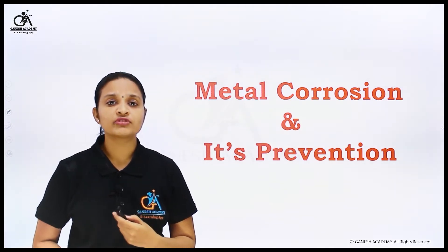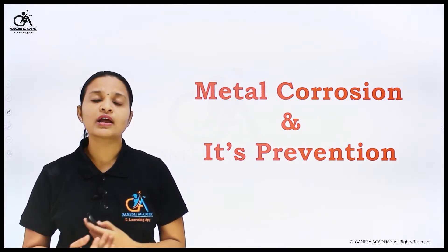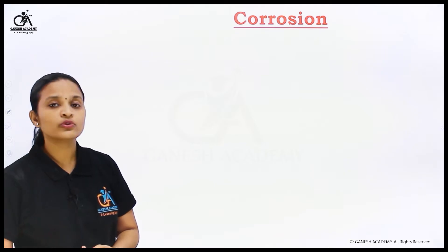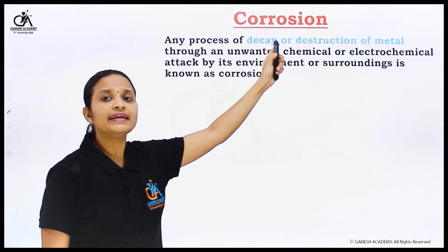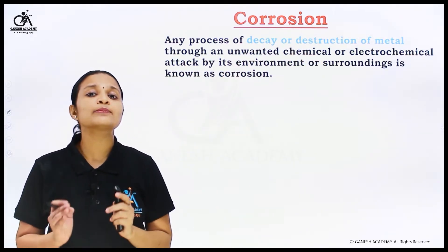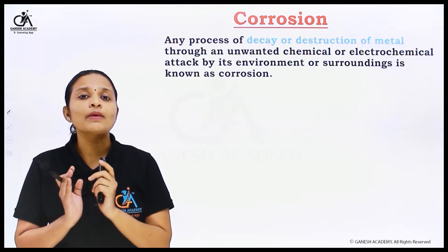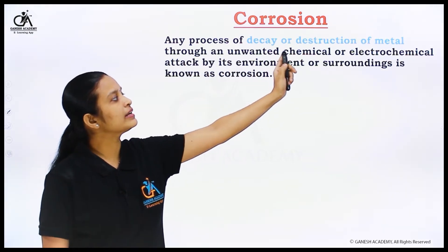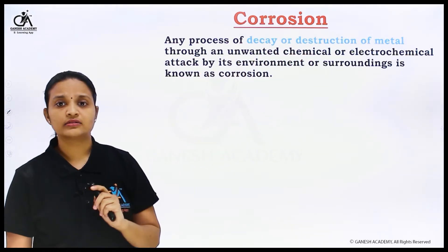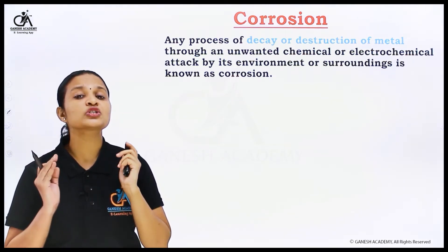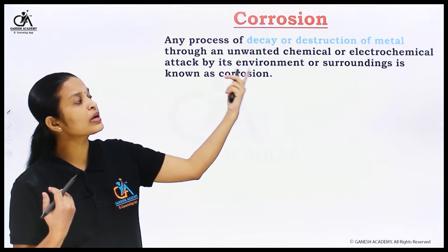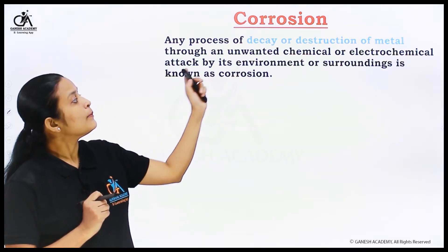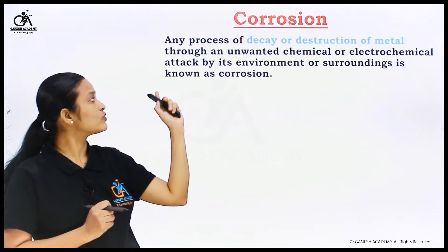In this topic, first I will explain what corrosion is, and after that, the types of corrosion. Starting with the definition of corrosion: it is basically a process of decay or destruction of metal. In that process, destruction of the metal takes place through an unwanted chemical or electrochemical attack by its environment or surrounding medium. So we call it corrosion.